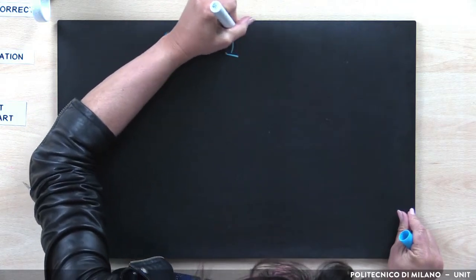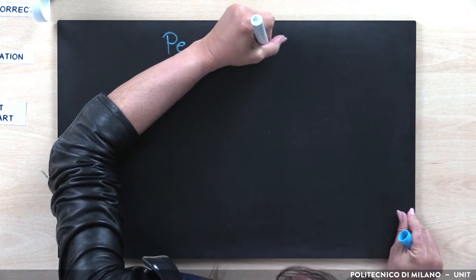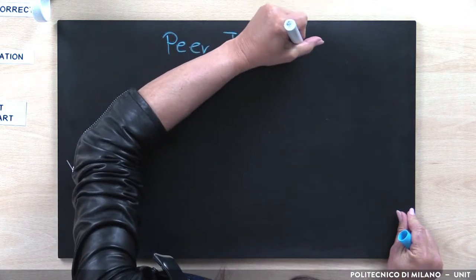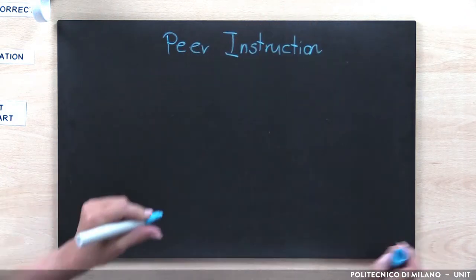Peer instruction, as a learning system, involves students preparing to learn outside of class by doing pre-class readings. Then, in class, the instructor engages students by posing prepared conceptual questions called concept tests that are based on student difficulties.